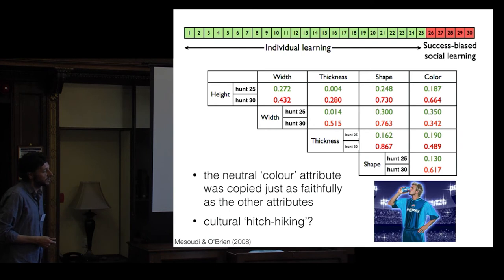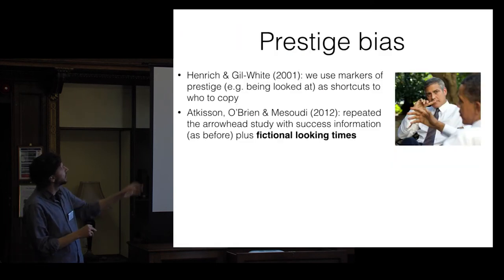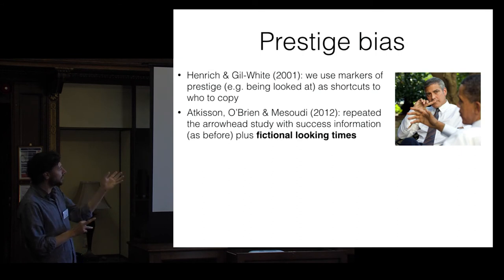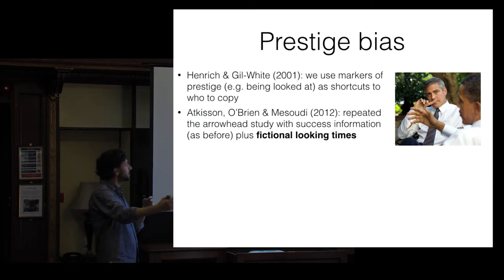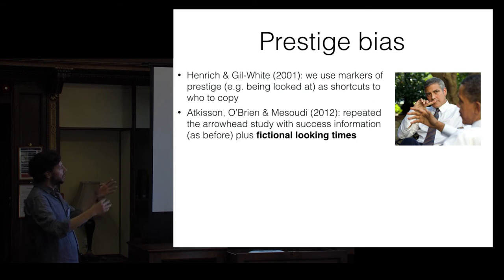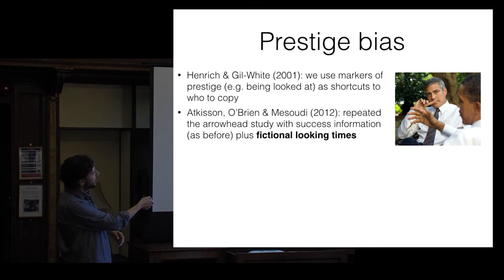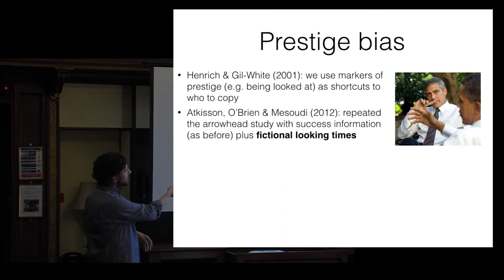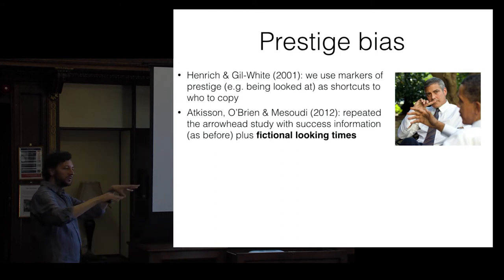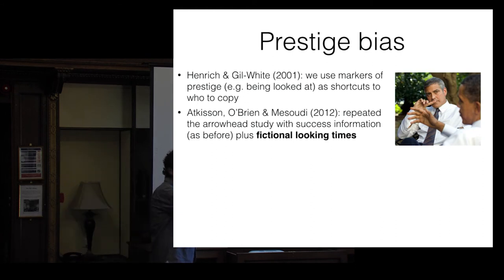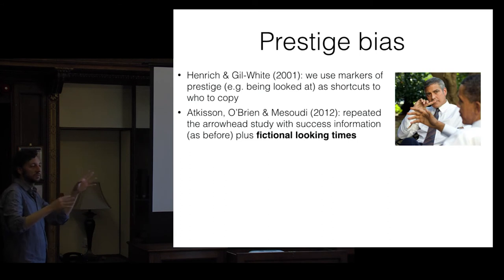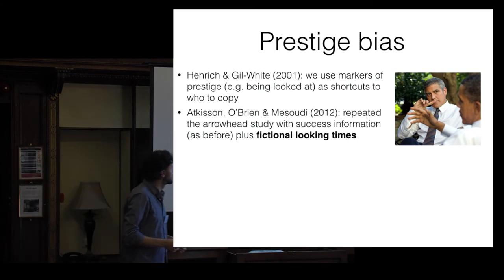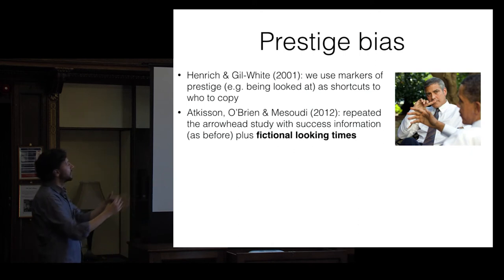We ran further experiments looking at prestige bias, introduced by Henrich and Gil-White, who argued we use minimal markers of prestige as shortcuts to who to copy. They use things like eye gaze — who people are looking at — as cues for identifying good models. George Clooney looking at Barack Obama illustrates the point: even high-status people use gaze to identify even higher-status models. In a study with Curtis Atkinson, we repeated the arrowhead study with success information as before but added fictional looking times — the number of seconds other players looked at each other in the game.